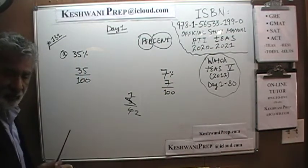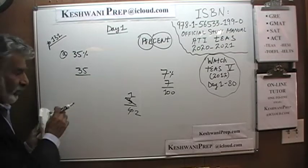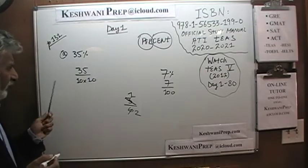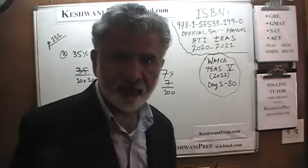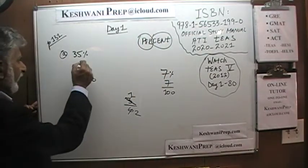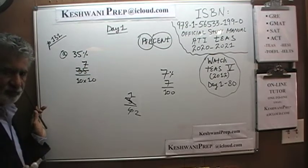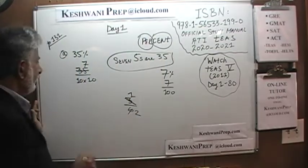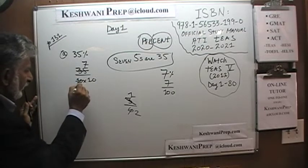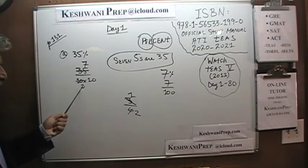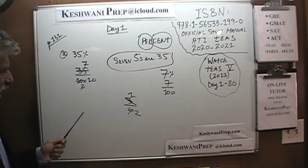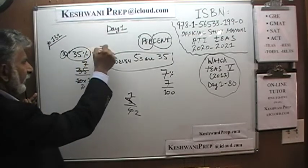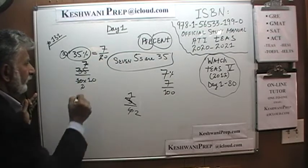To make it easier, write 100 as 10 times 10 so you deal with 10 at a time. Divide top and bottom by 5: 35 has seven 5s, so the top becomes 7. And 10 divided by 5 is 2, so the bottom becomes 2 times 10, which is 20. So 35% reduced to fraction form is 7 over 20.